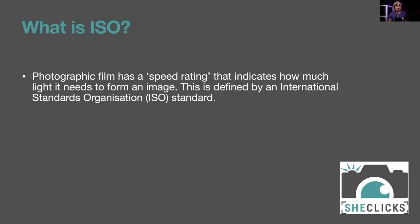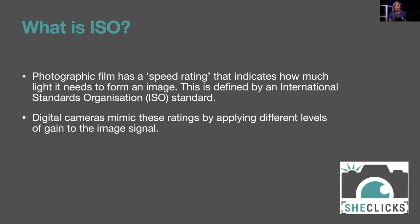If you swap to an ISO 200 film, it needs less exposure than ISO 100, and all ISO 200 films will be consistent with each other. With a digital camera you can't physically change the sensor, but you can apply more gain to the image signal — that's how digital cameras replicate different film speed ratings, and we call these settings ISOs.